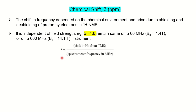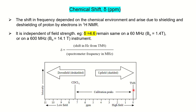The formula to calculate chemical shift is: delta equals the shift in hertz from TMS divided by the spectrometer frequency in megahertz. TMS — tetramethylsilane — is an internal standard used as the reference. We use TMS because its chemical shift value is 0, so all shifts are measured with respect to TMS only.